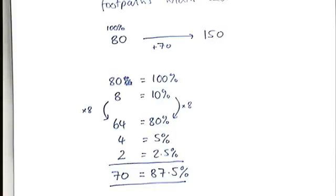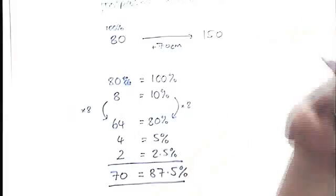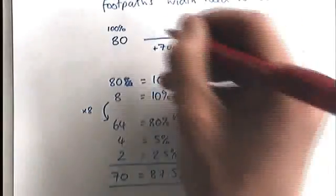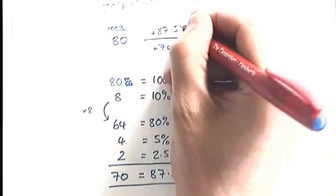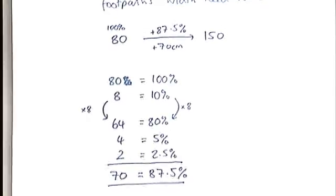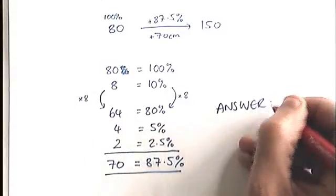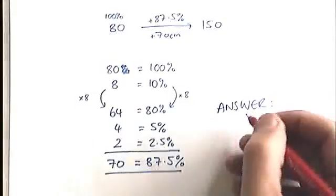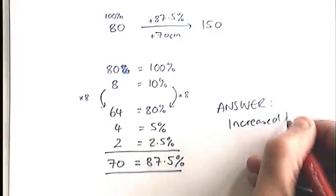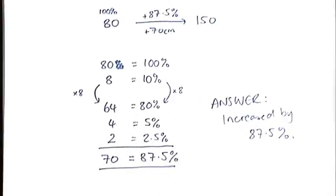This is a really tough one to do without a calculator. Probably a little bit harder than you'd be asked at GCSE. There's no reason you couldn't be asked this at GCSE. So we can see that that 70 centimeters that we've added on when we're widening the footpath is actually worth 87.5% of the original amount. And so that is the change. So the answer to the question, by what percentage does it need to be increased? It needs to be increased by 87.5%.